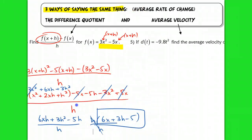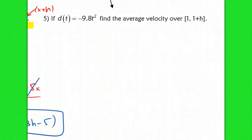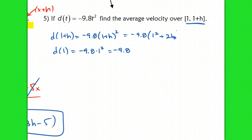Now let's do the average velocity over a given interval. The average velocity is found by finding the slope between two points on our function. I'm going to find d(1+h) and d(1). So: d(1) = −9.8 times 1² = −9.8. And d(1+h) = −9.8 times (1+h)². My first ordered pair, the easier one, is (1, −9.8). This is my x value — my input — and −9.8 is my output.